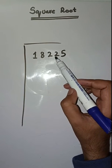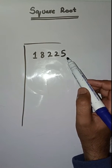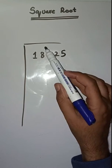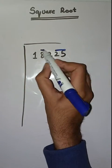We have to find square root of 18225. So first step is we have to make pairs from right to left like this: 25, 82 and 1.